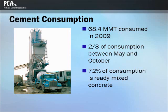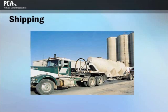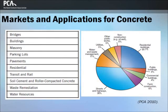Nearly two-thirds of cement consumption occurs between May and October, closely correlating with the construction season. The majority of cement is shipped to ready-mixed concrete producers, which account for 72% of cement consumption. About 97% of cement is shipped to customers by truck; other distribution modes include rail, barge, and bags. This slide shows the apparent use of Portland cement by market.